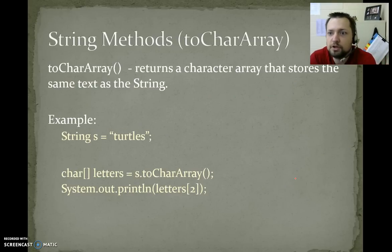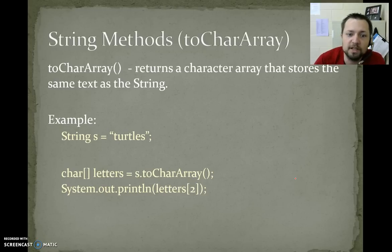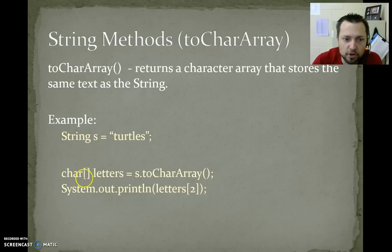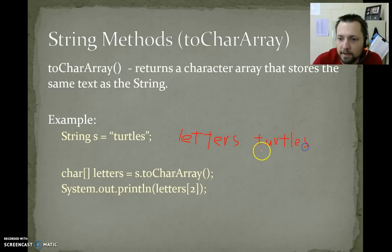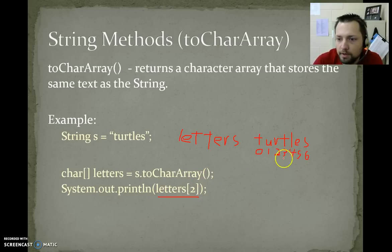String method: toCharArray — returns a character array that stores the same text as the string. We've already seen this in the last chapter on arrays. So String s equals "turtles", and then we say char[] letters equals s.toCharArray(). Letters would contain an array storing T, U, R, T, L, E, S at indices 0 through 6. So if we System.out.print letters[2], the output would be R.